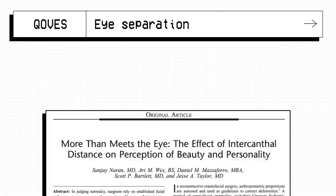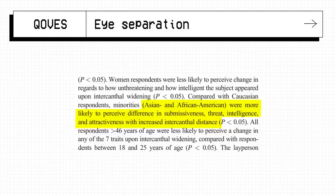More Than Meets the Eye by Sanjay Naran and colleagues suggest that African and Asian ethnicities were more likely to perceive decreases in submissiveness, threat, intelligence and attractiveness with widened distances.